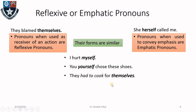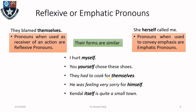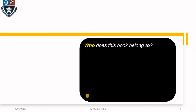Here again is a reflexive pronoun because it comes after the verb 'cook,' and it could also come after a preposition. 'He was feeling very sorry for himself' — again a reflexive pronoun. 'Kendall itself is quite a small town' — this is an emphatic pronoun because it comes immediately after the noun or pronoun.